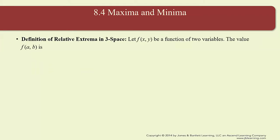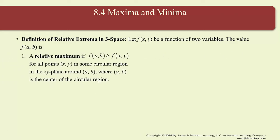Here's the definition of relative extrema in 3-space. For a function of two variables, the value f(a,b) — where a and b are numbers — is a relative maximum if f(a,b) is greater than or equal to f(x,y) for all points (x,y) in some circular region in the xy-plane around the point (a,b), where (a,b) is the center of the circular region. So (a,b) lives in the xy-plane with z-coordinate zero, and the point at the top (a, b, f(a,b)) is a maximum.